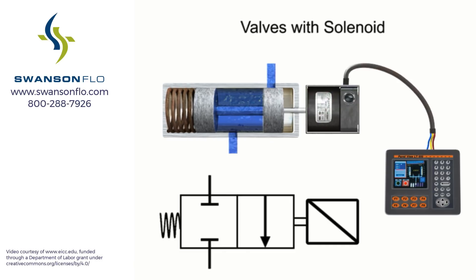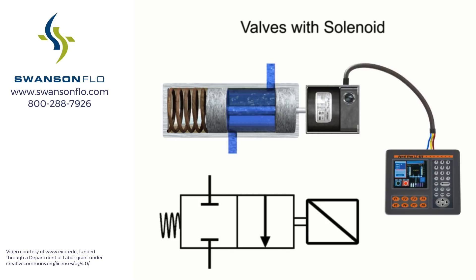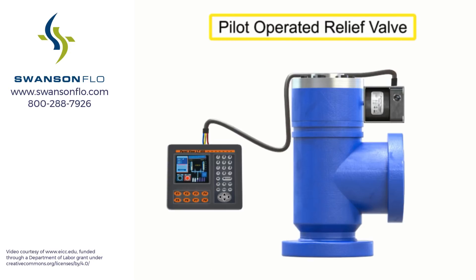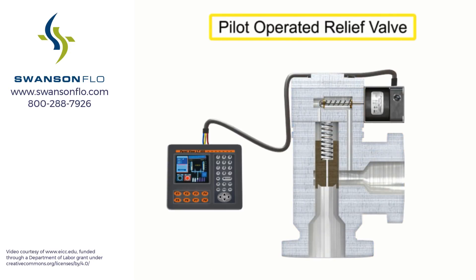Solenoid valves are said to be either direct or pilot-operated. A direct-operated valve is shown here. A pilot-operated valve has a pilot and bleed orifice and utilizes line pressure for operation. This is a pilot-operated relief valve.